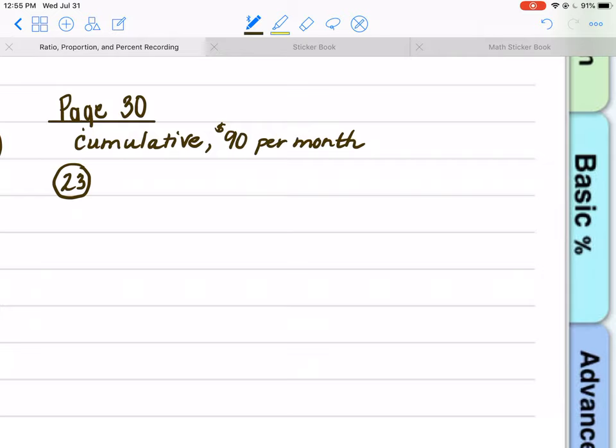So the first question asks us to find this simple interest rate. Well, if the interest, which is a part, is $90, and the whole amount that he financed is $5,000, we have what we need here. If we use our percent proportion, or whatever means you're doing percents, it doesn't have to be this one.